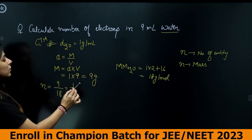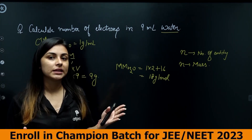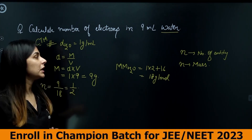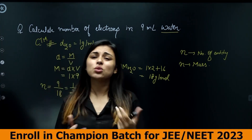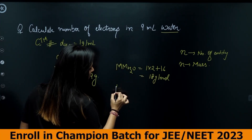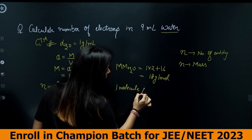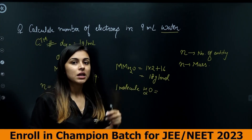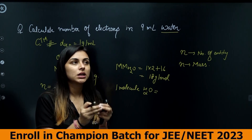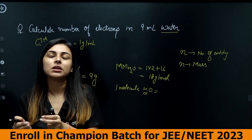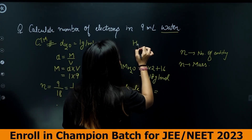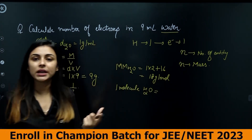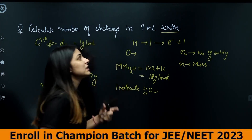So we have 1/2 mole of water. Now to find electrons — let's think about one molecule of H₂O. Hydrogen has atomic number 1, so each neutral hydrogen atom has 1 electron; there are 2 hydrogens, giving 2 electrons. Oxygen has atomic number 8, so 8 electrons. Total electrons per molecule of H₂O = 2 + 8 = 10 electrons.